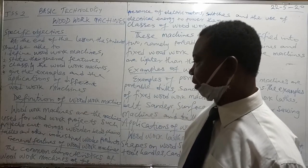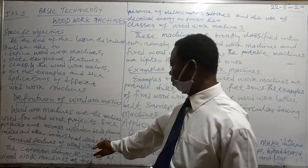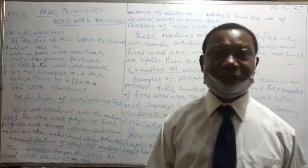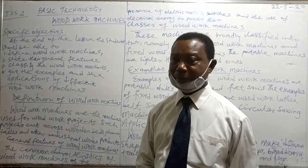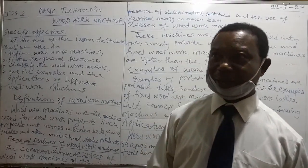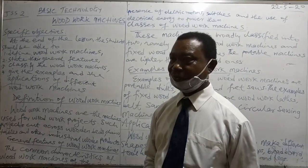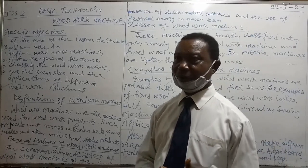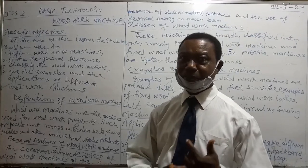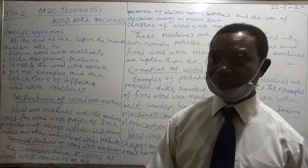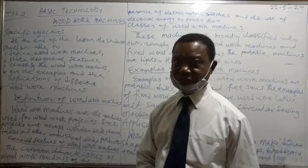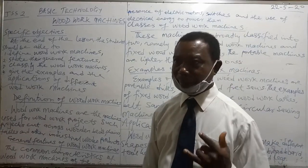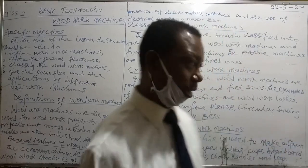That brings us to the general features of woodwork machines. The common characteristics of woodwork machines cover the following: first of all, all woodwork machines have what we call electric motors. Two, they have switches. And lastly, they are powered by electrical energy.